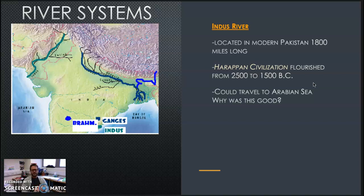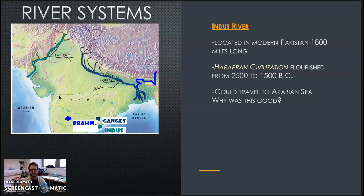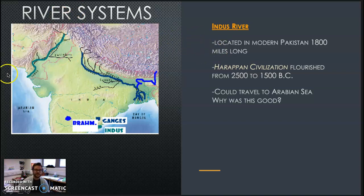You guys are incredible. One of the things that's interesting about the Indus River is it can travel to the Arabian Sea. And why would this be good? Why would it be good for them to be able to travel to the Arabian Sea? Well, the reason is the fact that it opens up trade early. One of the advantages India had over some eastern civilizations — like classical China — is that they were actually able to trade with some western civilizations earlier. So certain technologies were able to come there.